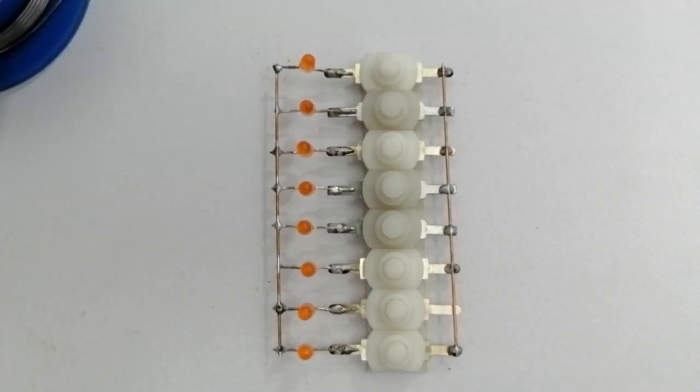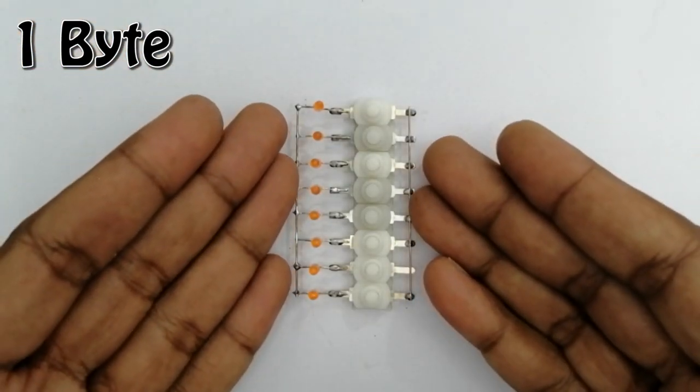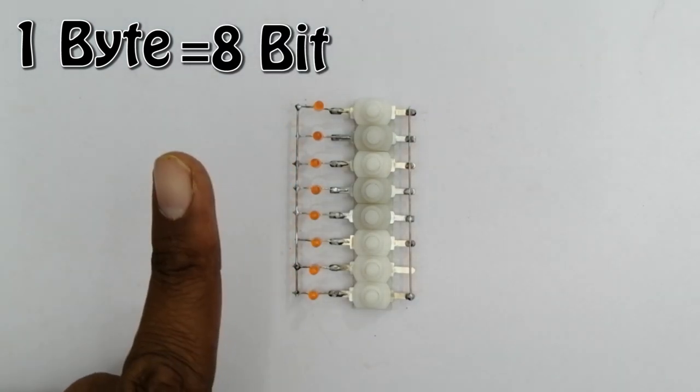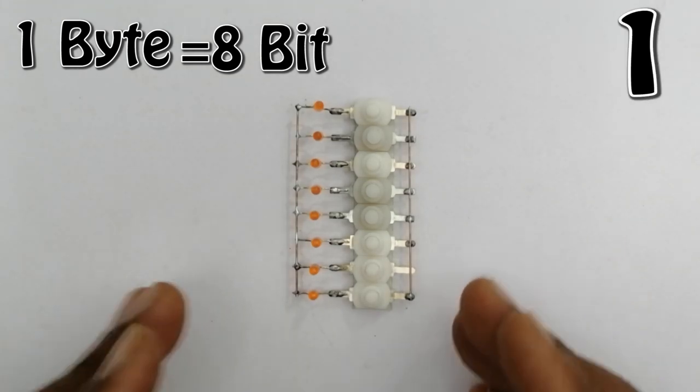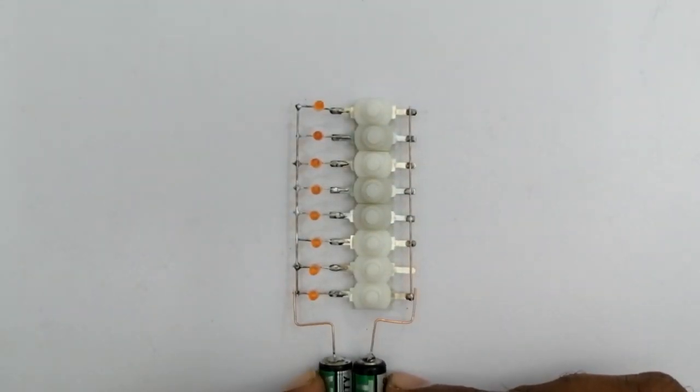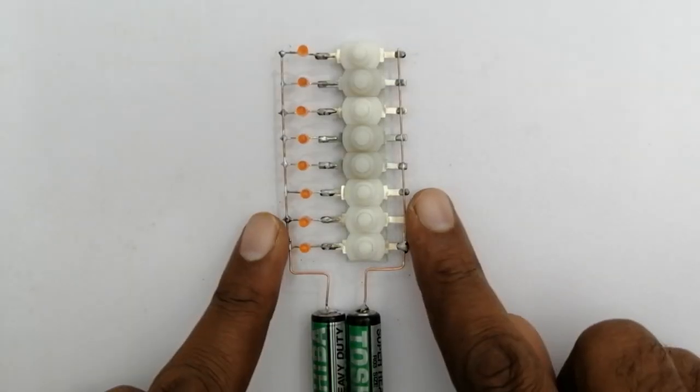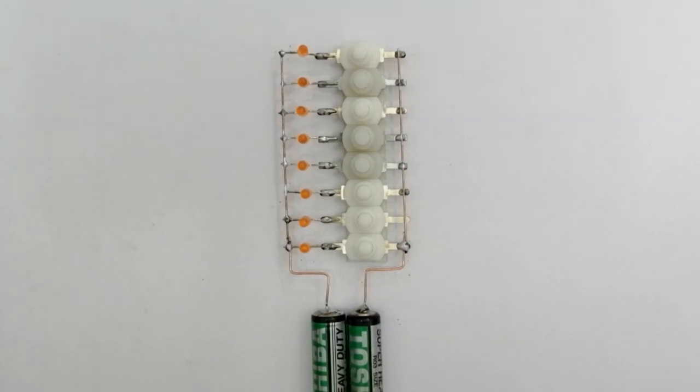We have created one byte memory with the help of eight switches and eight LEDs. You know that there are eight bits in one byte. In a bit there are only two possible values, either zero or one. Now we connect the battery to this system. Our one byte RAM is now ready. Let's save the data in it.